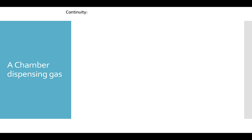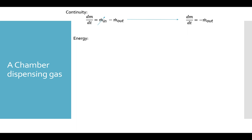Let's talk first about a chamber that's dispensing gas — think of your deodorant. When you use deodorant, you can feel the tank getting colder as you dispense the gas. We'll see why that happens using continuity and the first law. Continuity for a dispensing chamber says the rate of change of mass within the control volume equals inflow minus outflow. With no inflow, we just have a flow going out.